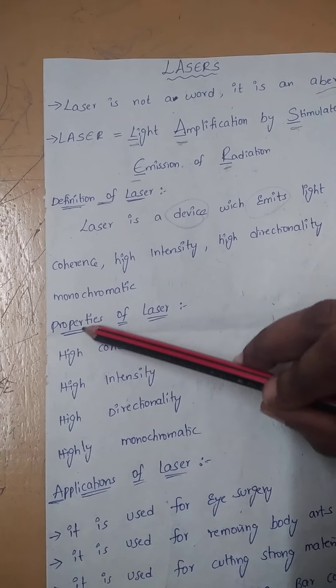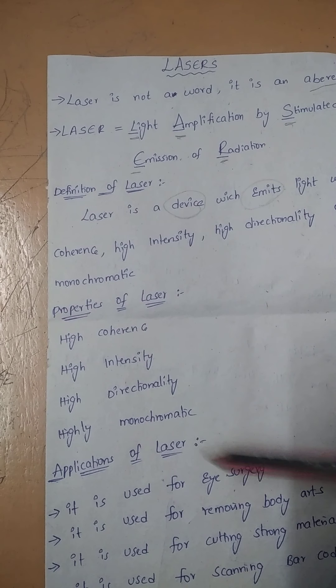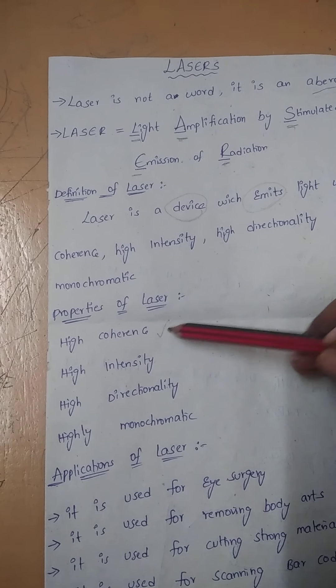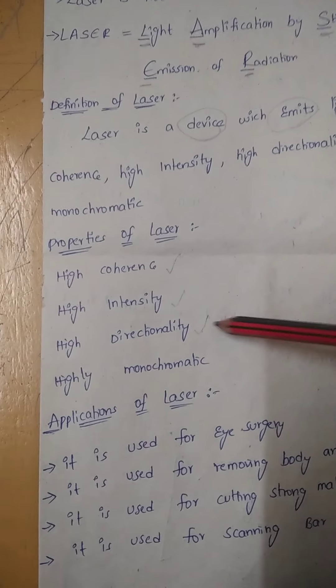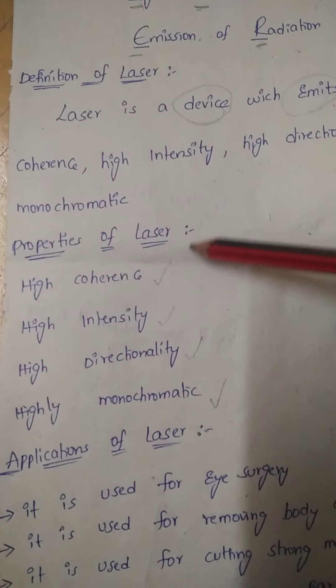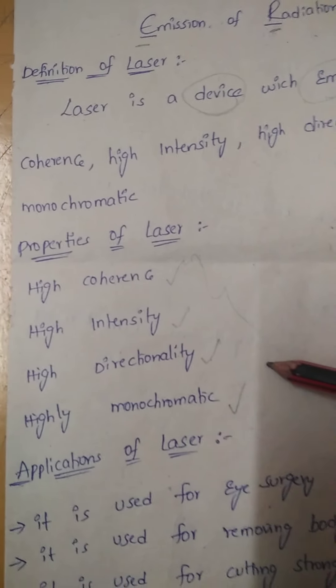Let's see the properties of laser. There are mainly four properties of laser. Those are: high coherence, high intensity, high directionality, and high monochromaticity. These are the four properties of laser.